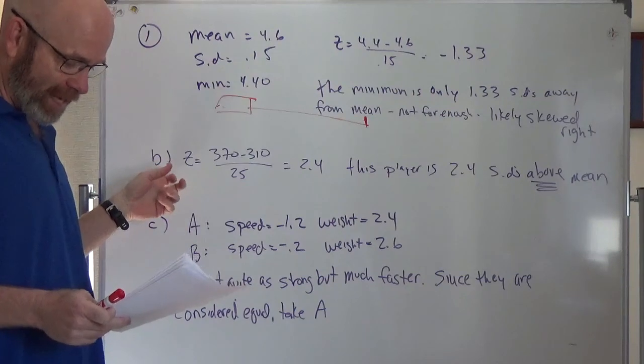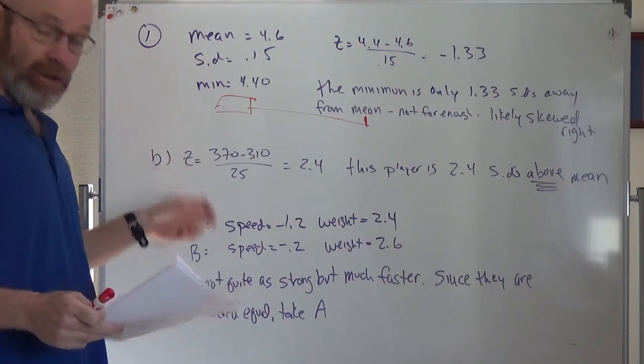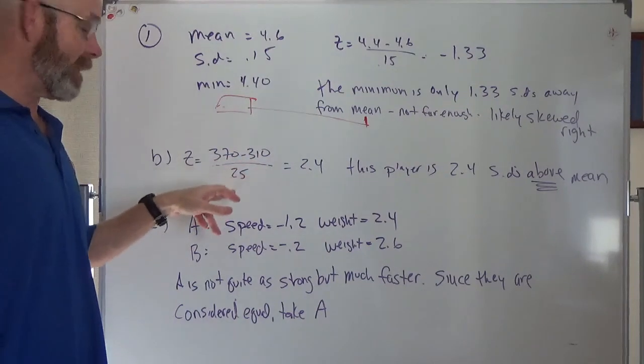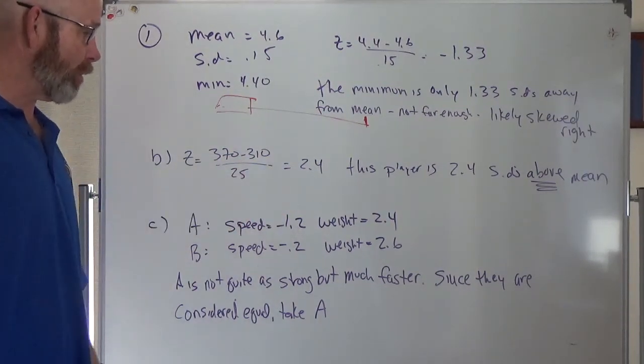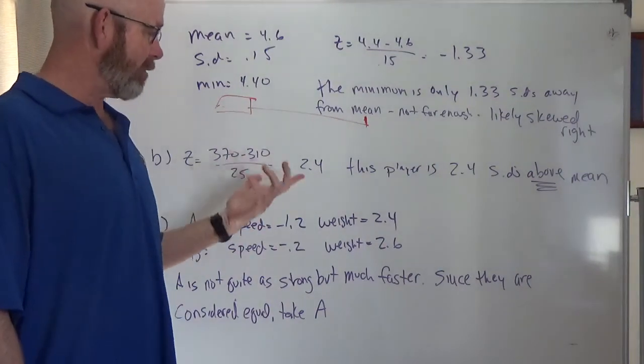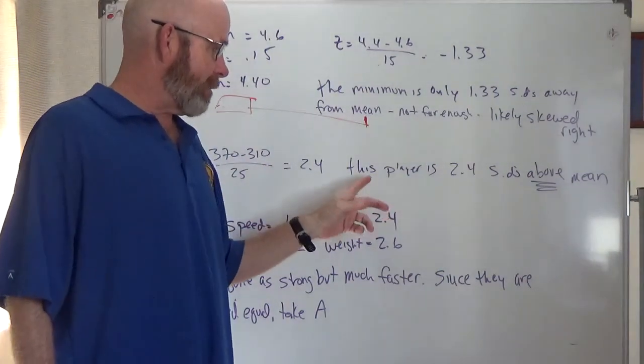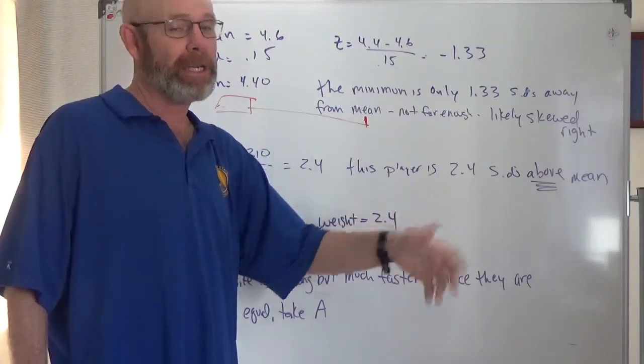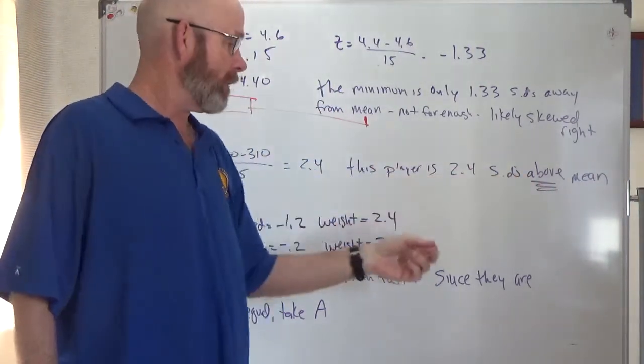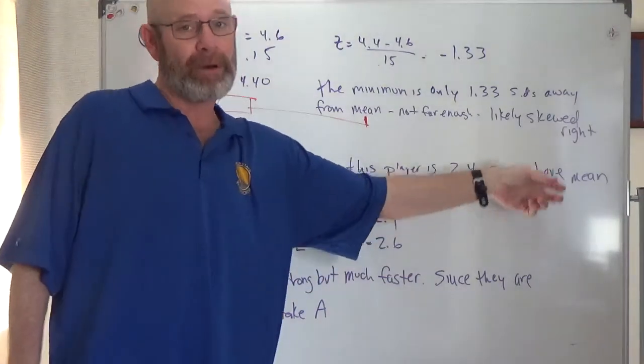Then they just ask you to find a z-score of this next guy and interpret the z-score. So his raw score minus the mean divided by standard deviations, he's got a z-score of 2.4. We did this in class a bunch of times and a lot of people made the same mistake where I asked you to interpret it. And you said the player is 2.4 standard deviations away from the mean. You can't use away, you have to be more specific. It's either above the mean or below the mean. So it's 2.4 standard deviations above the mean.